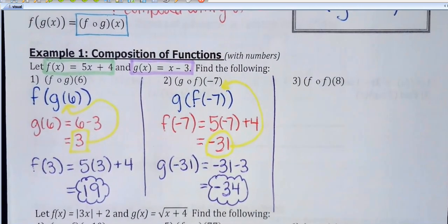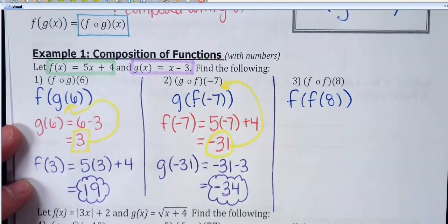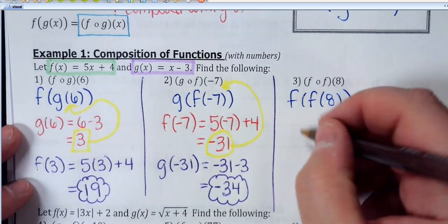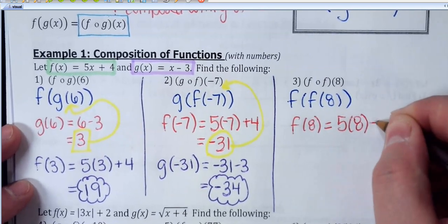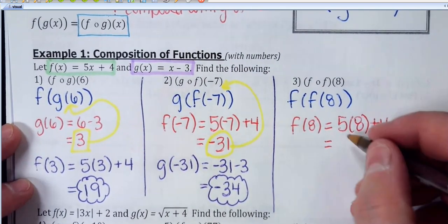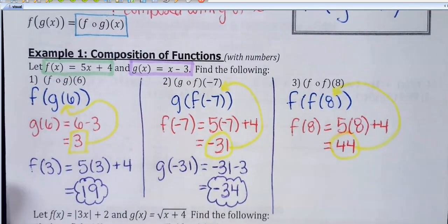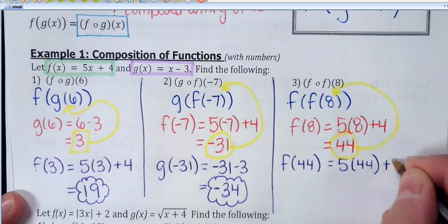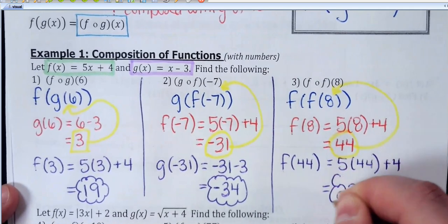I'm going to do one more. You can compose a function with itself — this is f of f of 8. I'm going to use the same function rule twice. Working from the inside out, first figure out f of 8. The rule is 5x plus 4, so 5 times 8 is 40, plus 4 is 44. That's the first problem. Then I use f again but plug in 44: 5 times 44 plus 4 gives 224. That is the actual answer to the question after performing the composition.